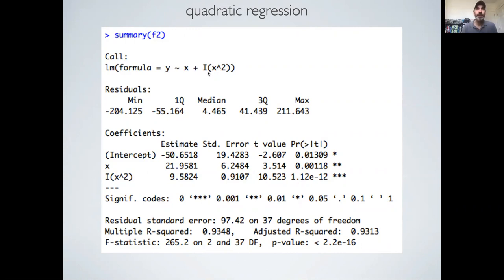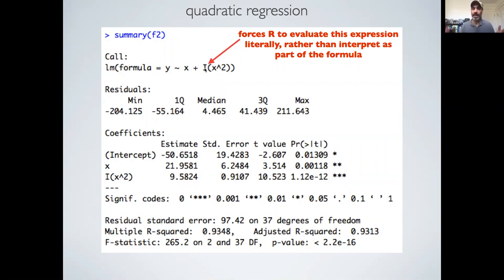The important notation here is that I didn't just do x squared by itself. A reminder that that caret symbol is interpreted as a power. But I embedded that x squared in this I(), and that I function is used in R equations and it forces R to evaluate that expression literally rather than interpret it as part of the formula. Because as we'll get to in the next series of videos on interaction terms, R will interpret multiplication in equations as interaction terms.